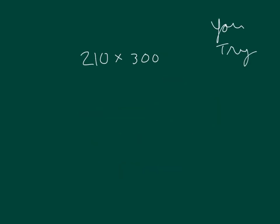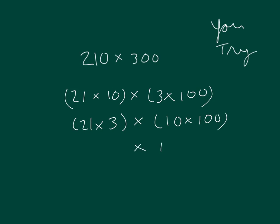You try. Group the numbers together. 21 times 3 is 63, so I end up with 63,000 as my answer.